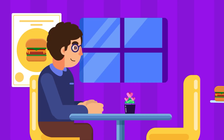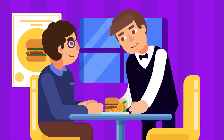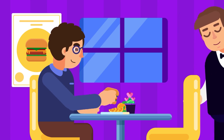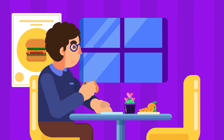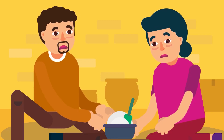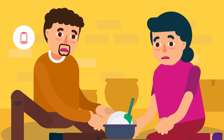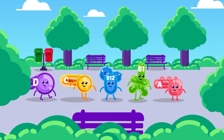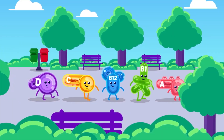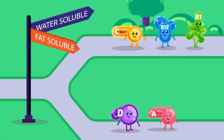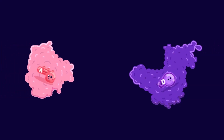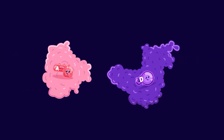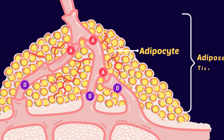In developed countries, people eat processed foods more, and thus vitamin-rich raw fruits and vegetables are avoided. In underdeveloped countries, people do not get a balanced diet and are malnourished, resulting in vitamin deficiency. Vitamins can be grouped into two types: fat-soluble and water-soluble. Fat-soluble vitamins are soluble in fats and can be stored in the fats of the body.